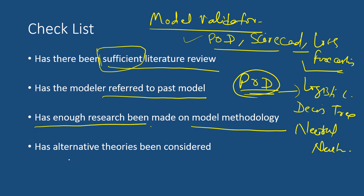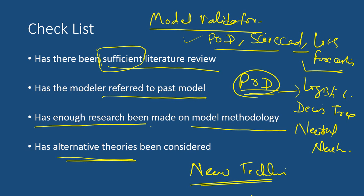The next checklist is whether alternative theories have been considered. If the company or modeling team has been following a particular type of statistical theory for a very long time, say 5-6 years, has the modeling team given enough thought about alternative or newer technologies and theories? With time, more advanced techniques are coming up in the modeling space, and the model validator should ensure this has been researched.